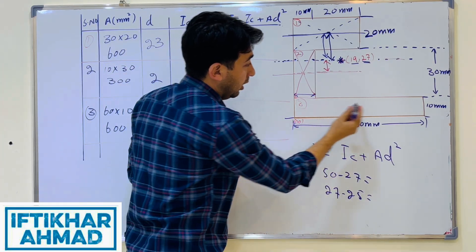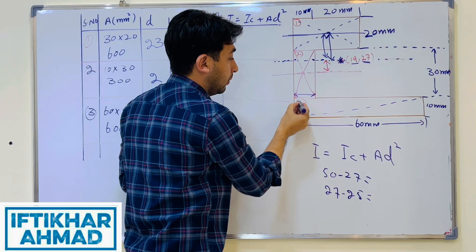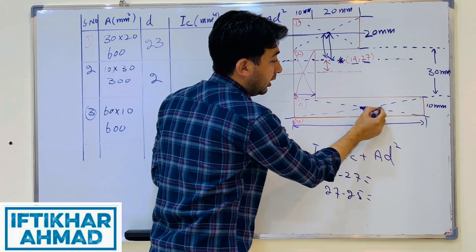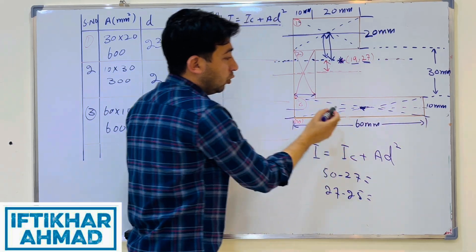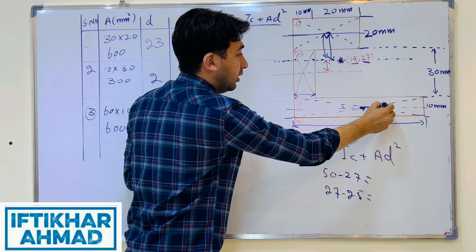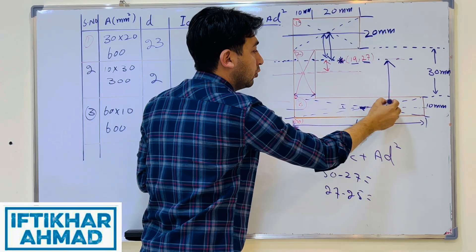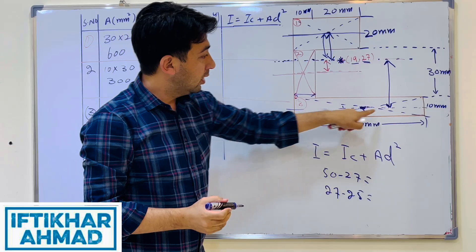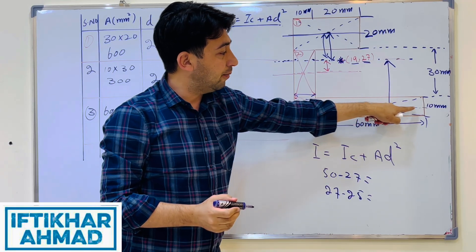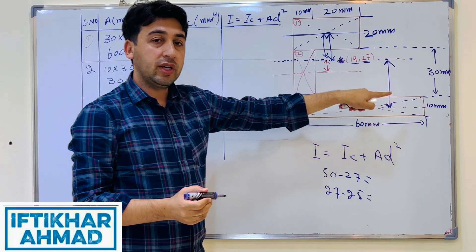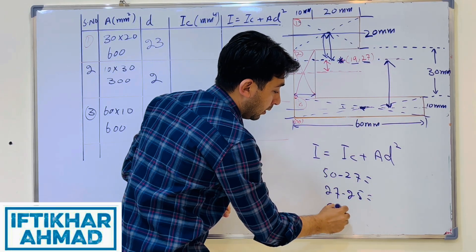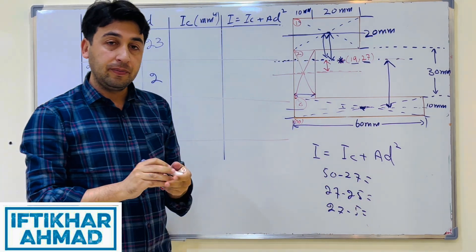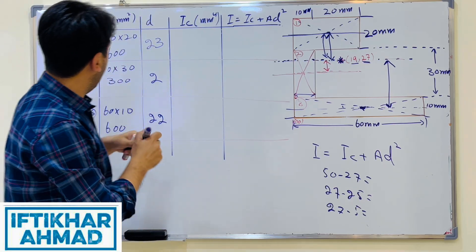For D3, shape 3 is the bottom rectangle with height 10 mm, so its centroid is at half of 10 = 5 mm from the origin. The composite centroidal axis is at 27 mm. So D3 = 27 − 5 = 22 mm.